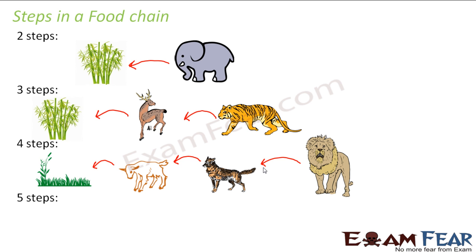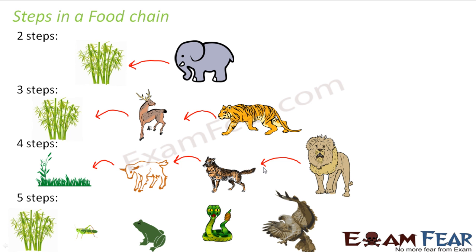Similarly, you can have a food chain with five steps. For example, grasses are eaten by grasshoppers, frogs feed on the grasshoppers, snakes feed on the frogs, and the hawk feeds on the snakes. So the number of steps keeps increasing. When I talk of a food chain, it can involve many organisms. But generally, it is seen that a food chain consists of three to four levels, not more than that — and why so, we will talk about as we go ahead with this topic.